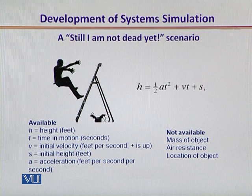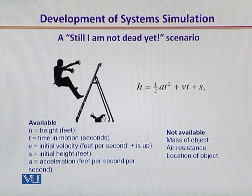However, we have not been provided with the mass of the individual, the air resistance that could be at play, and the location where this situation is taking place. The equation h = ½at² + vt + s describes the mathematical model of the falling man scenario.